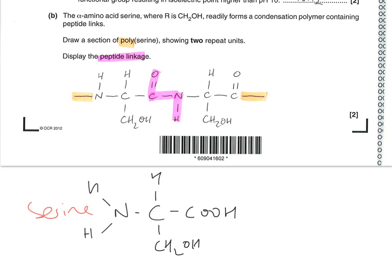Part B talks about a specific amino acid called serine, where the R group is a CH2OH group. We're told it readily forms a condensation polymer containing the peptide linkage. I've drawn serine at the bottom here to explain what happens when it forms a condensation polymer. Condensation is the joining of small molecules to make a longer molecule with the elimination of a small molecule such as water. To make water, we need to lose the hydrogen from the NH2 group and the OH from the COOH group.